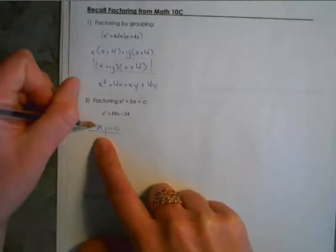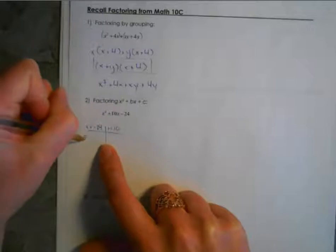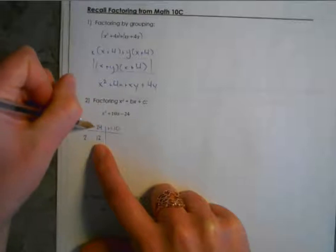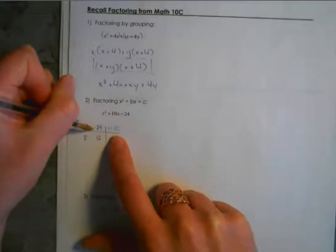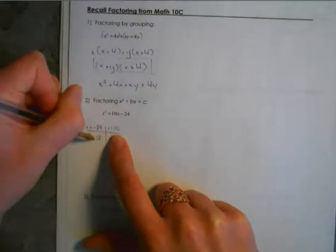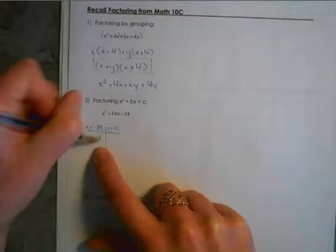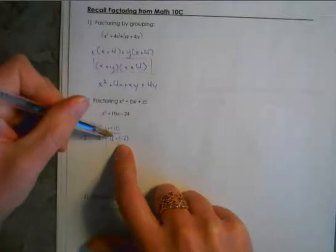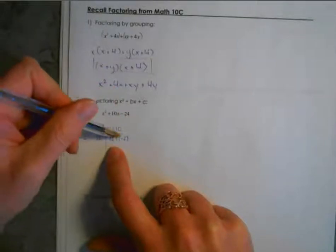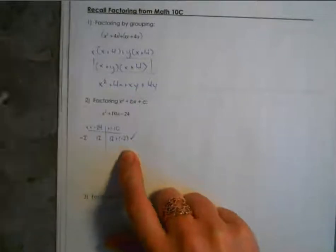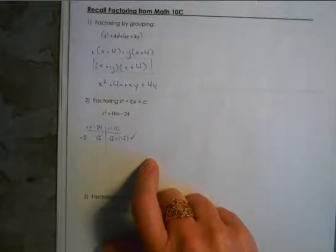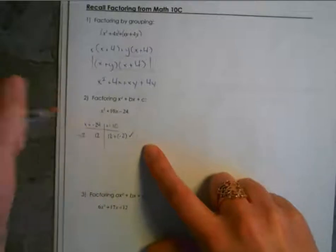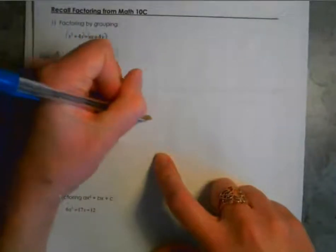What about 2 times 12? Remember one of these terms will have to be negative to multiply to a negative value, and we're looking for positive 10. So if I had positive 12 and multiplied by negative 2, then positive 12 plus negative 2 — basically 12 minus 2 — gives us positive 10. So the set of numbers I want is positive 12 and negative 2. Once I've figured that out, I set up two sets of brackets.